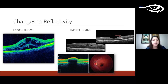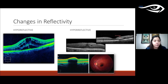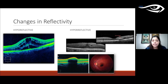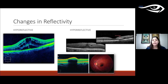OCT changes are essentially changes in reflectivity. The only thing causing decreased reflectivity — hypo-reflective dark areas — is the presence of fluid, which can appear in different compartments. Increased reflectivity is caused by various conditions: deposits such as hard exudates, membrane formation as in epiretinal membranes, or hemorrhages, which cause increased reflectivity with shadowing.